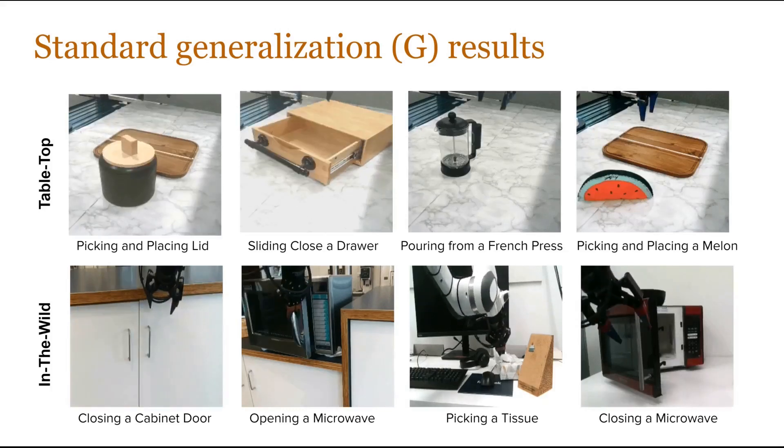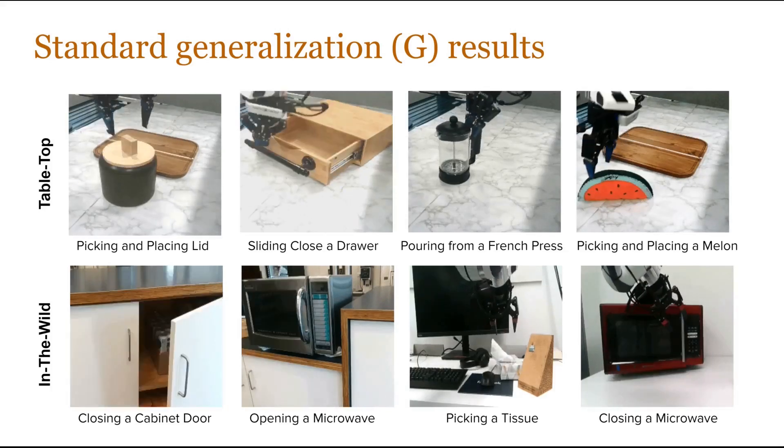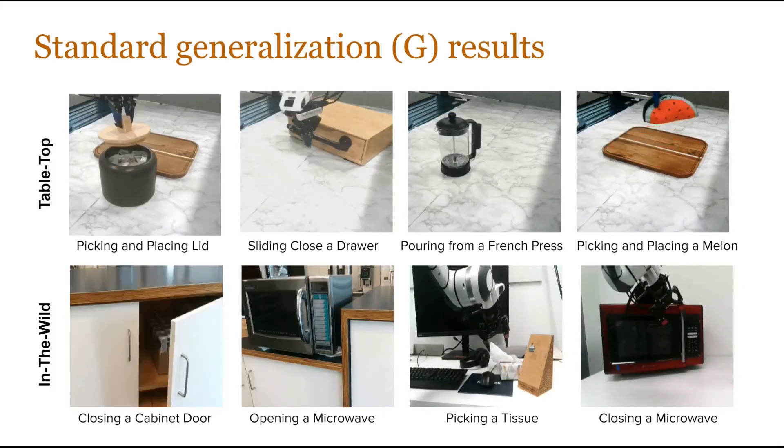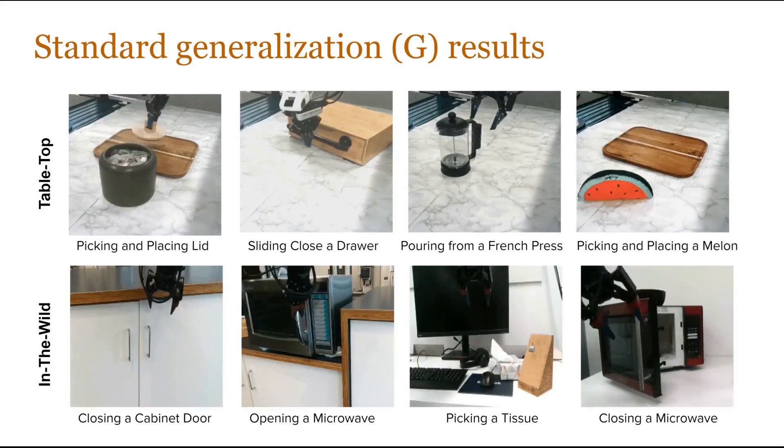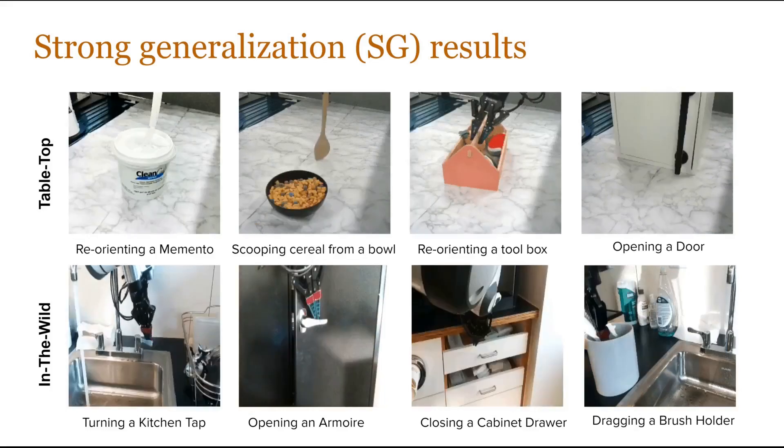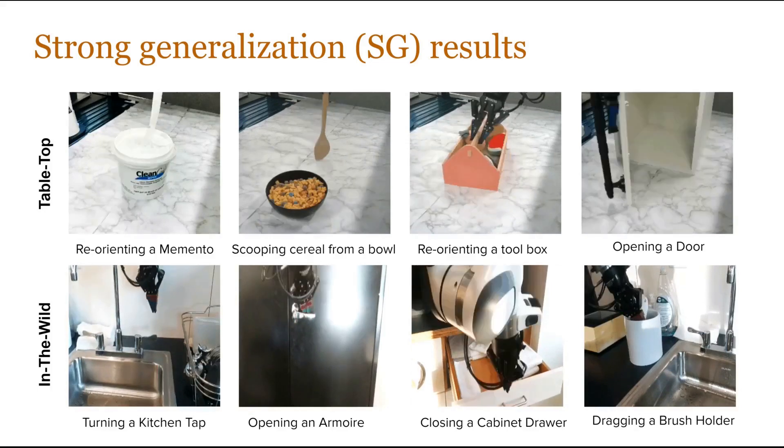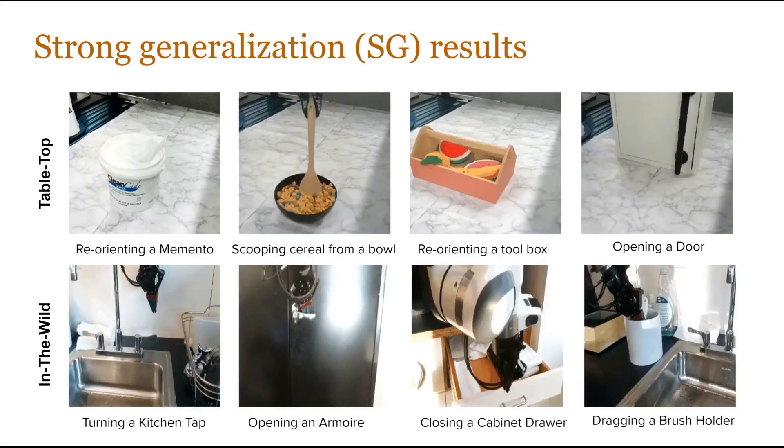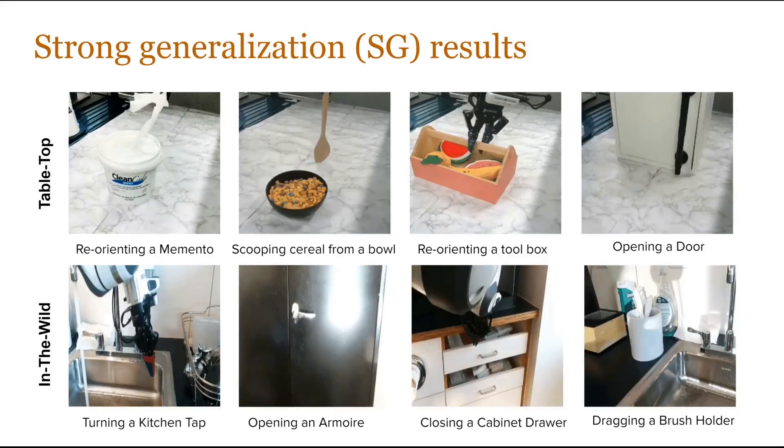Now let's look at some of the robot evaluation videos of HOPMan in action. We can see different skills being reliably executed in the standard generalization category. Even in the strong generalization category where we have completely unseen object types and completely unseen skills, HOPMan is able to execute plausible manipulations across diverse scenarios, both in the tabletop setting and in the wild.